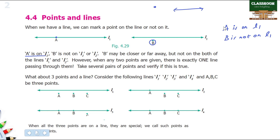In this example, A, B, C is not on L1. Here is the point: A is on L1, and B and C are not on L1. Line 2 is not on L1.